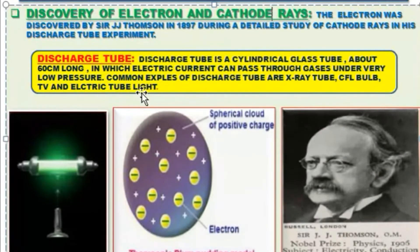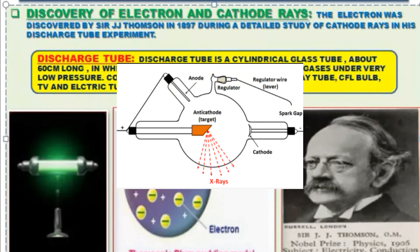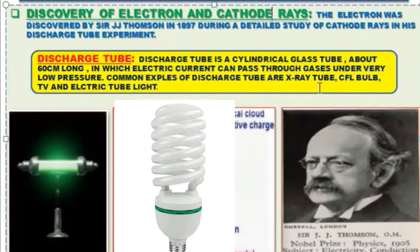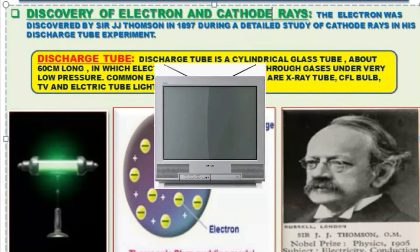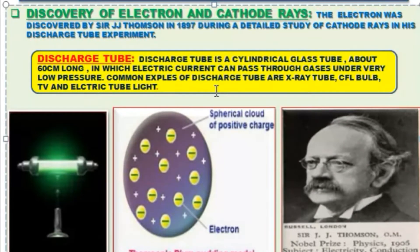A discharge tube is a cylindrical glass tube about 60 centimeters long, in which electric current can pass through gases under very low pressure. Common examples of the discharge tube are X-ray tubes, CFL bulbs, TV tubes, and electric tube lights — things you most probably find in your homes and in the lab.